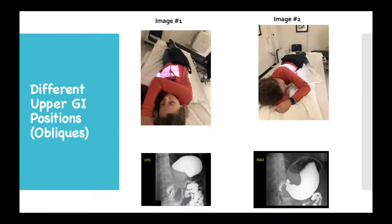Image number one shows an individual demonstrated in a left posterior oblique (LPO) position. The air-barium distribution in an LPO position is very similar to that of a supine position. Image number two shows an individual demonstrated in a right anterior oblique (RAO) position. The air-barium distribution in an RAO position is very similar to that of a prone position.